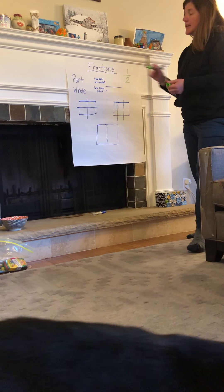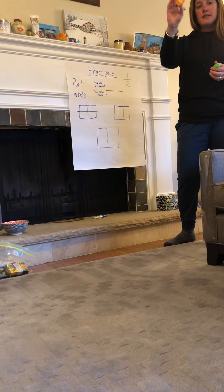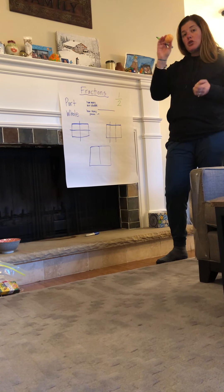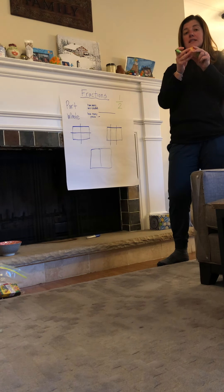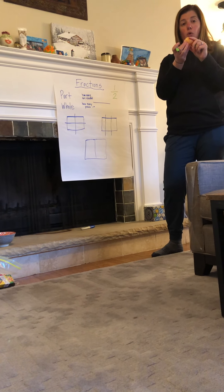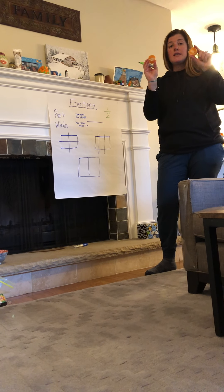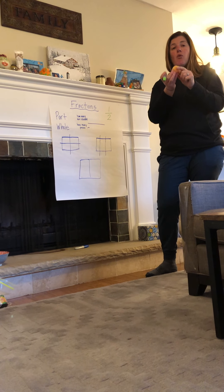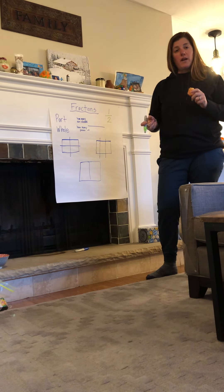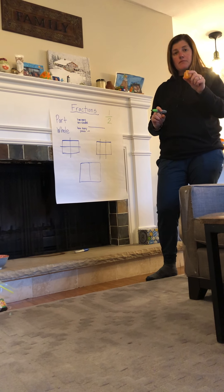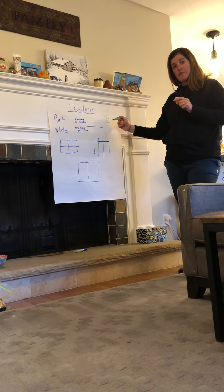The one is how many pieces we're talking about — one piece. The bottom number, the two, is how many pieces there are together that make the whole. So for this example, there are two pieces that make the whole, and I just ate one of them. So I ate one half of the clementine.